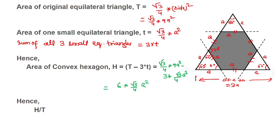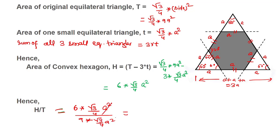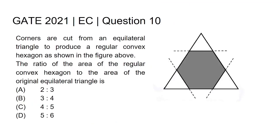Hence, the ratio of the area of the hexagon to the area of the original equilateral triangle is H divided by T, which equals 6 times root 3 by 4 times A squared divided by 9 times root 3 by 4 times A squared. The A squared and root 3 by 4 terms cancel, giving 6 by 9, which simplifies to 2 by 3. Hence the ratio is 2 is to 3 — that is our final answer. The answer to this question is option A: 2 is to 3. Thank you.